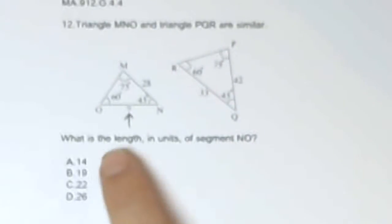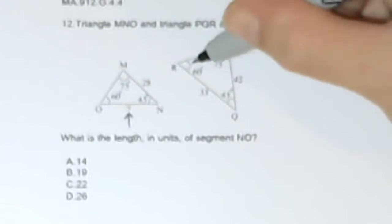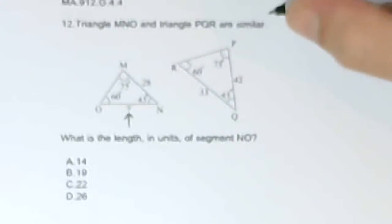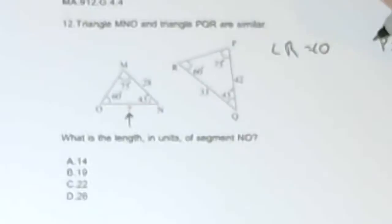Well, basically if the triangles are similar, then their sides are in proportion. So angle R corresponds to angle O, angle P corresponds to angle M, and angle N corresponds to angle Q.